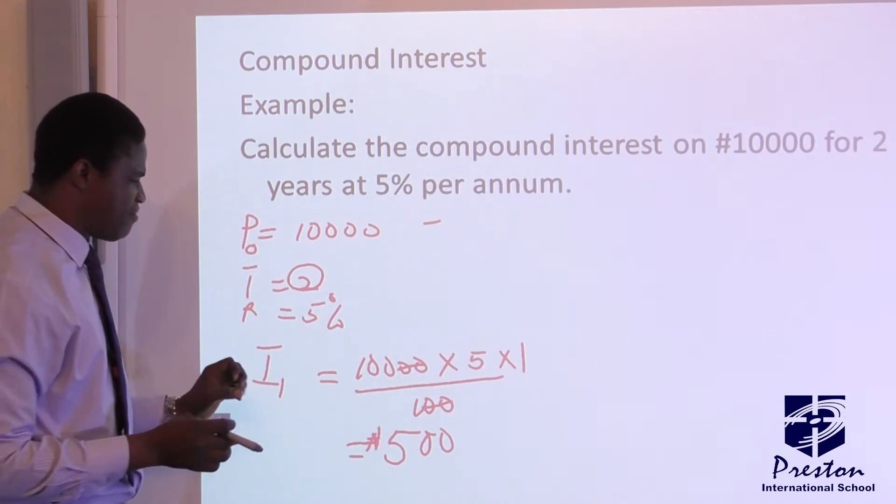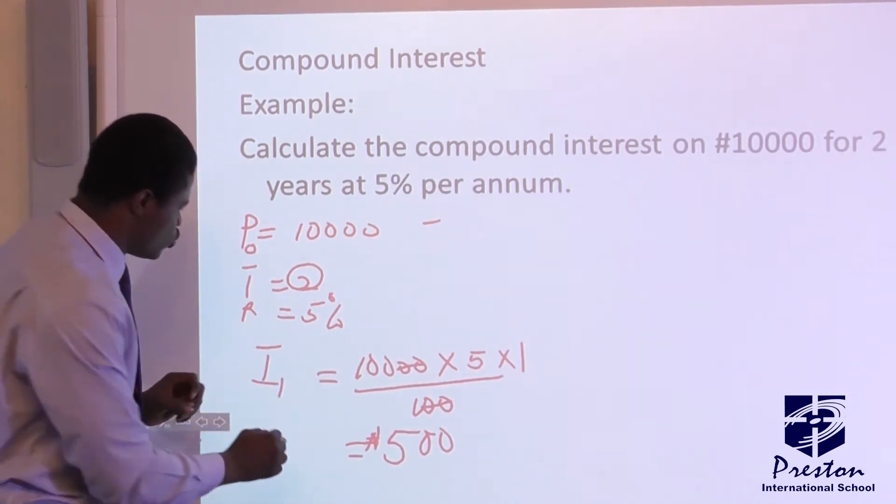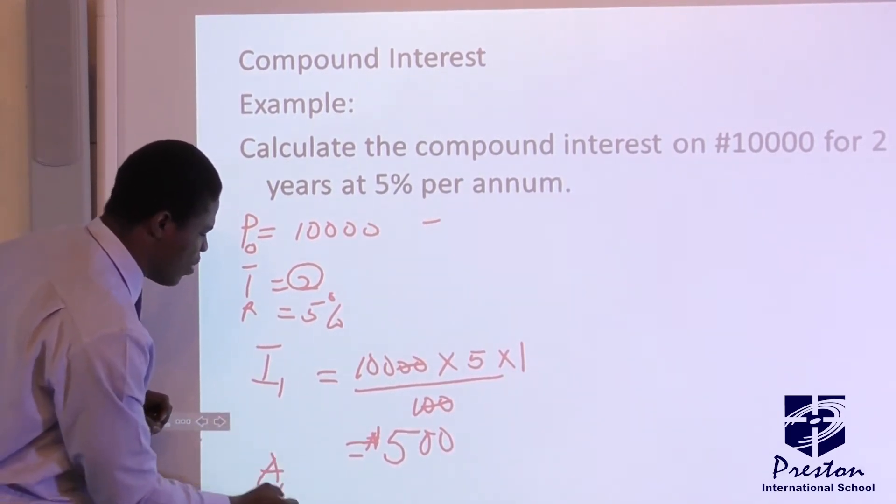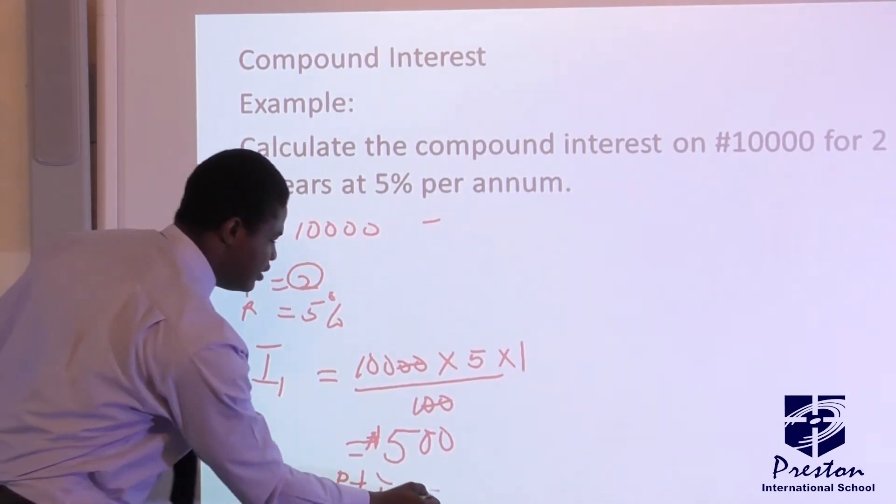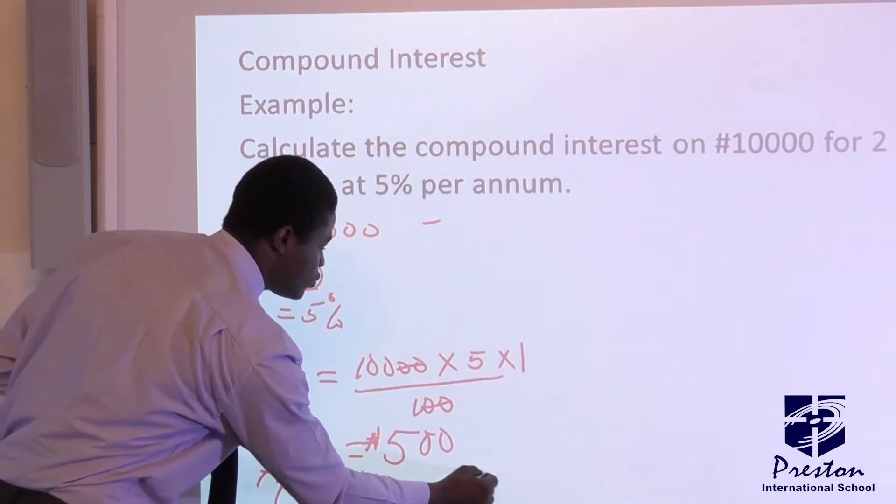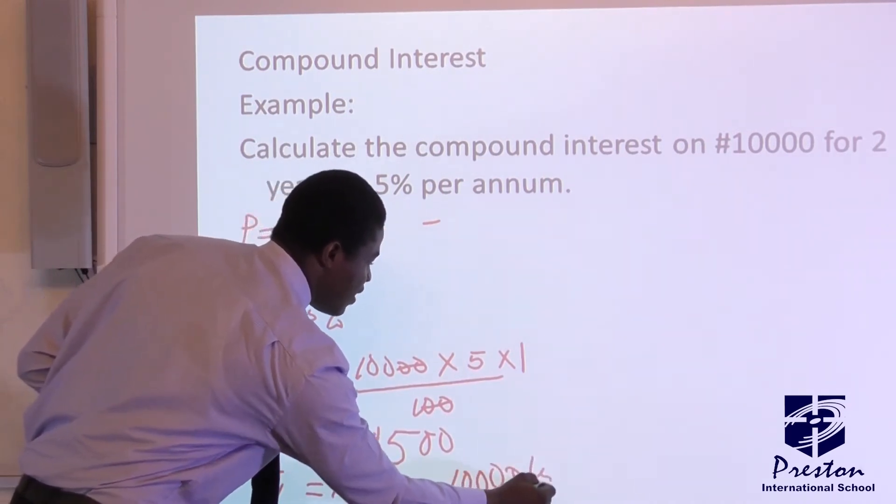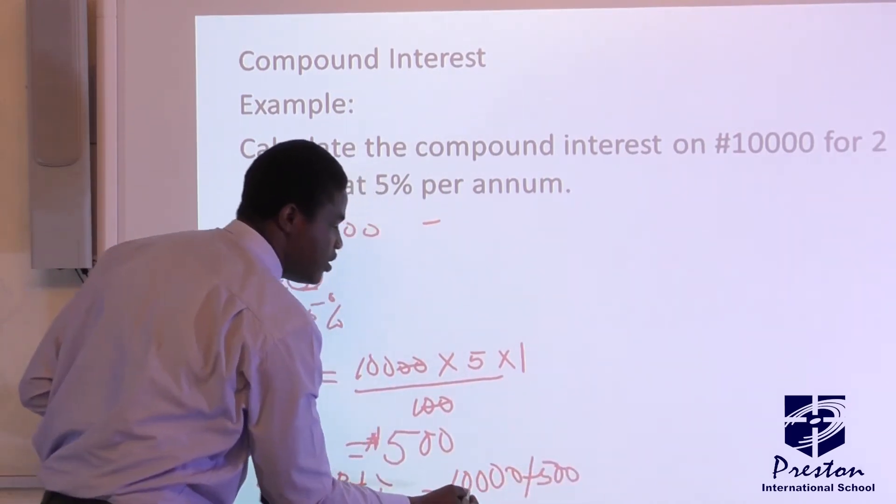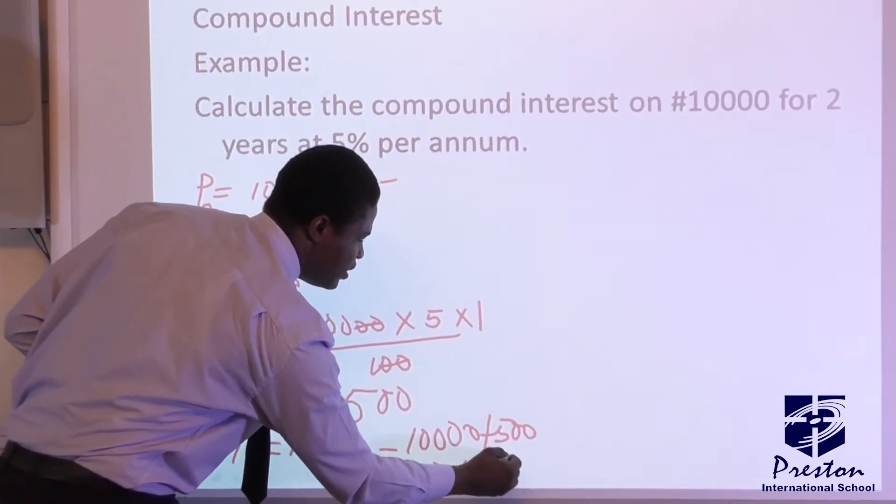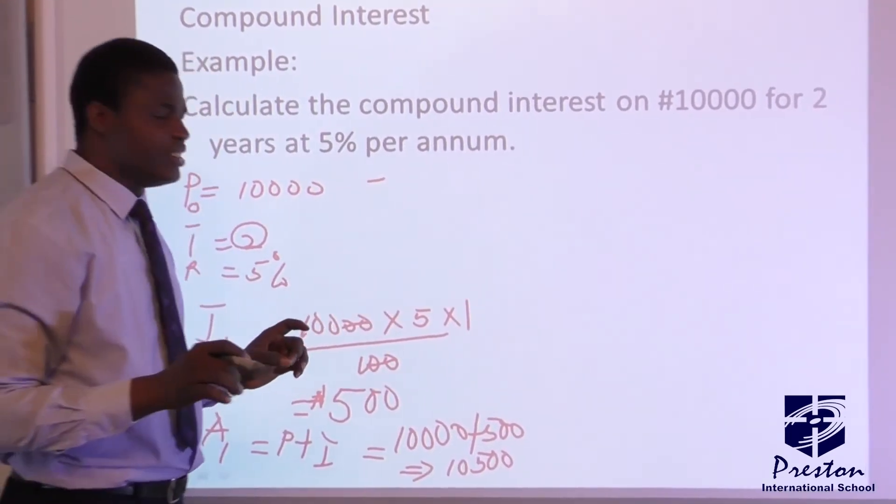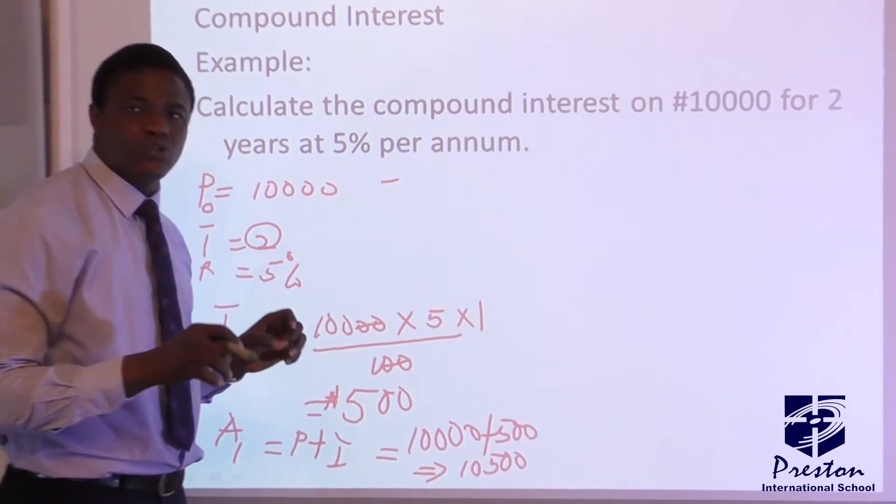So in this case, after this is the interest 1. So the first amount, amount 1, that is, that will give us principal plus interest. And this is equal to 10,000 Naira plus 500 Naira. At the end of the day, we have 10,500 Naira. So at the end of the year 1, the amount, the amount we have is 10,500 Naira.